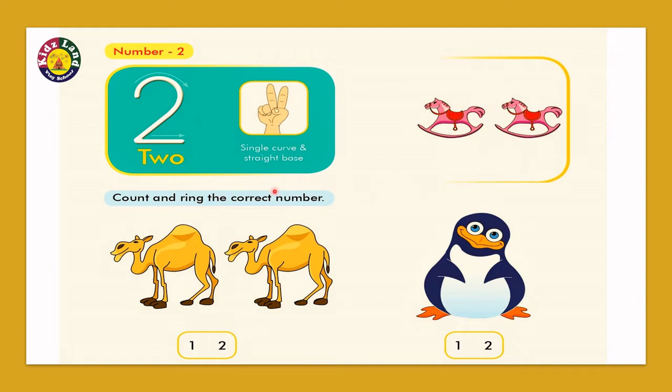Okay, let's go to the activity. Count and ring the correct number. First animal, what animal is this? It is the camel. And how many camels are there? Two camels. What should we circle? Number 2.